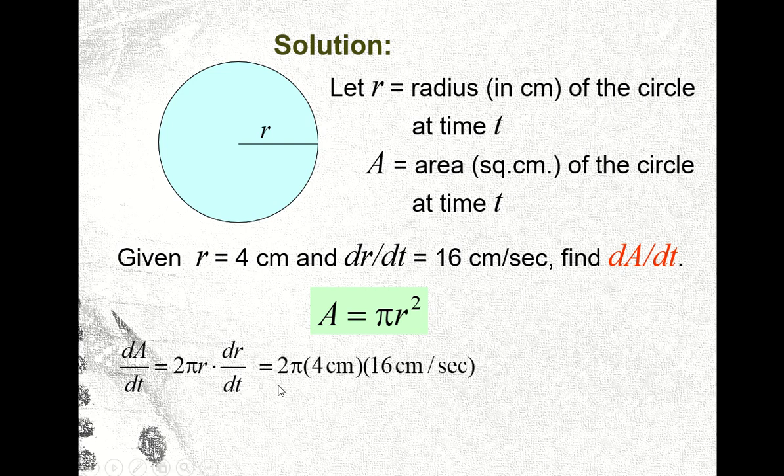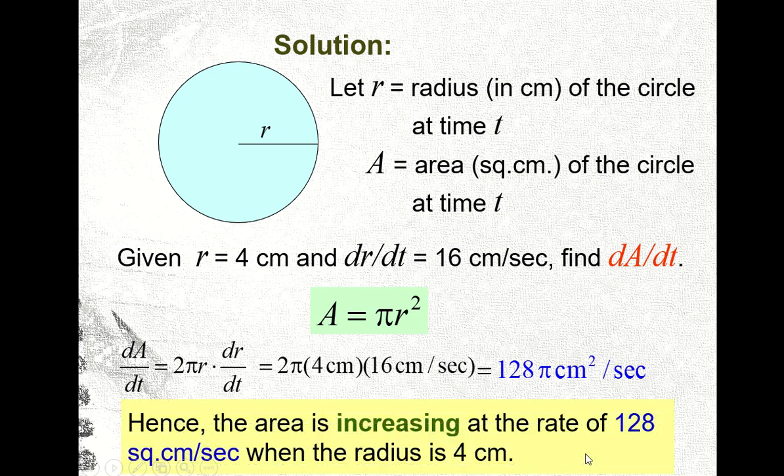Okay, so this is now our equation after differentiating both sides implicitly. Okay, so substituting the given. So the given, we have pi. Sorry, we have 2 here and then pi is constant, so 2 times pi. r is given as 4 cm. The radius is 4 cm. And the rate of change of the radius with respect to time is given as 16 cm per second. So therefore, the rate of change of the area with respect to time is equal to 128 pi cm squared per second. Okay, so don't forget this is area. Okay, so area means we have square of the given unit.